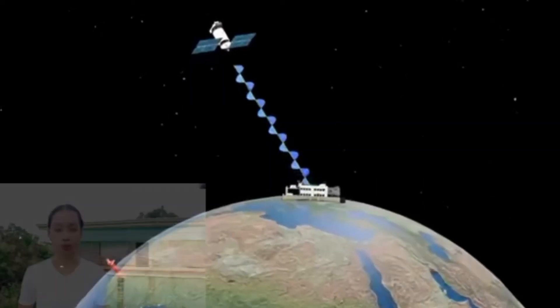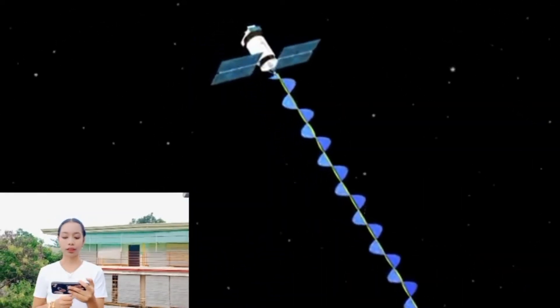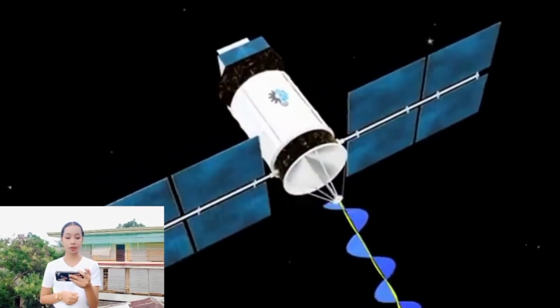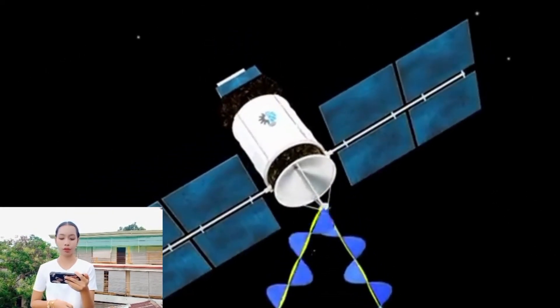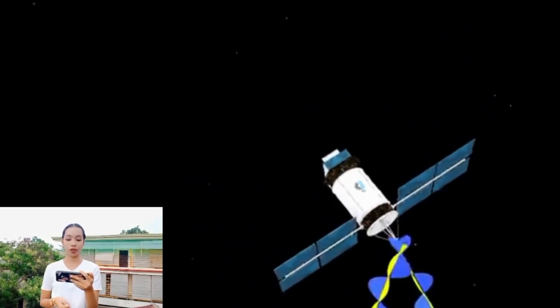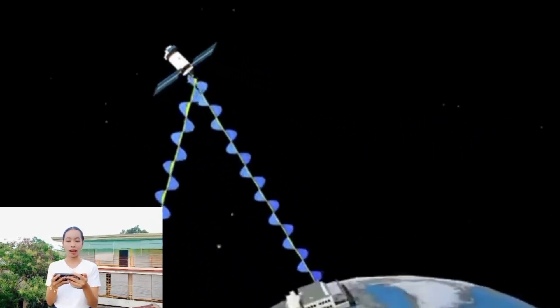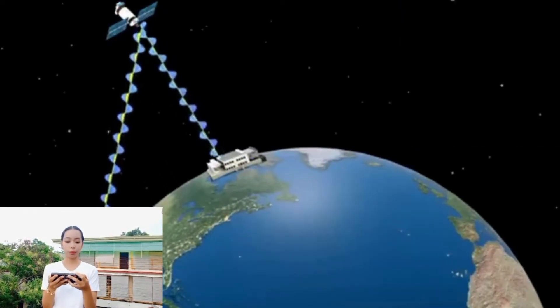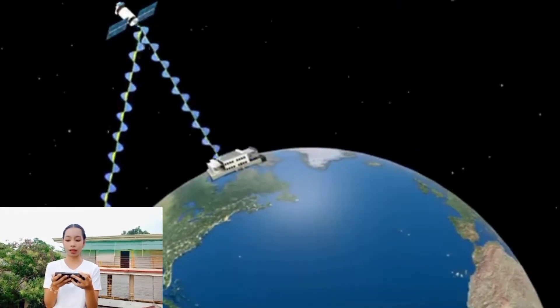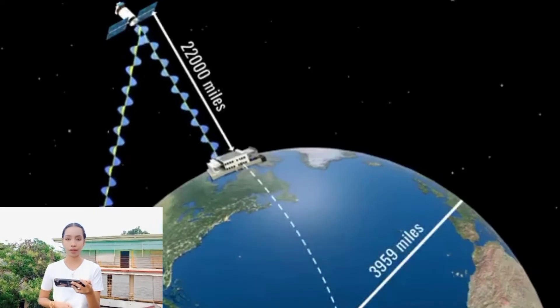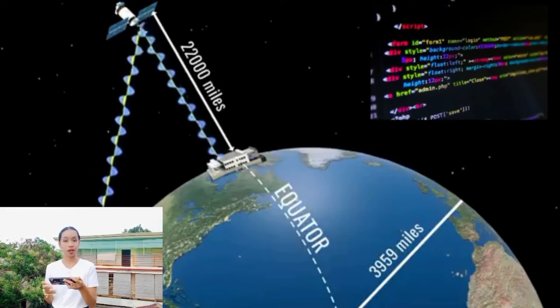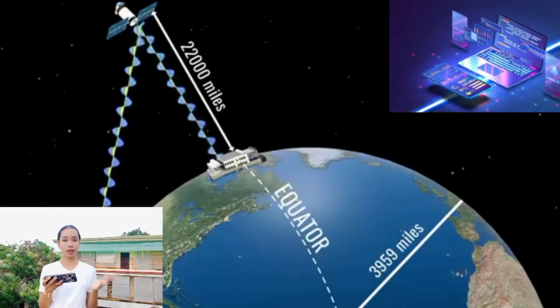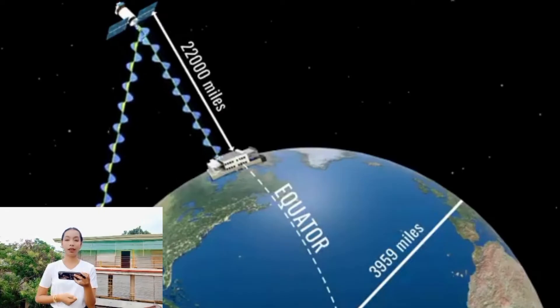The next lesson is about the Internet. The internet, or net — network of networks — is the largest computer network in the world that connects billions of computer users. The word internet comes from a combination of interconnection and network. A network is a collection of computers and devices connected via communication channels and transmission media that allow sharing of resources such as hardware, software, data, and information. Generally, nobody owns the internet.